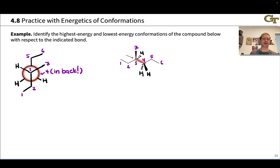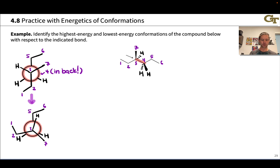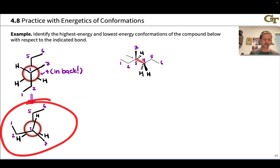Now let's think about rotating around the front carbon. I'm going to leave carbons four, five, and six completely fixed, leave the two hydrogens at the back carbon completely fixed, and just rotate the groups at the front carbon — that's torsion, like wringing out a towel. I took carbon seven and rotated it around, which also moves the ethyl group and the hydrogen. This takes us from a staggered conformation to an eclipsed conformation.